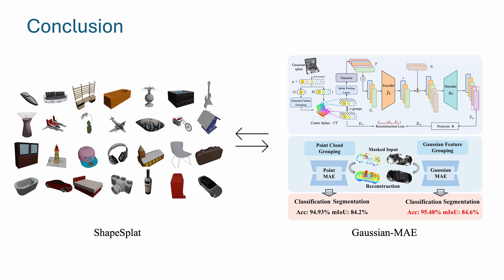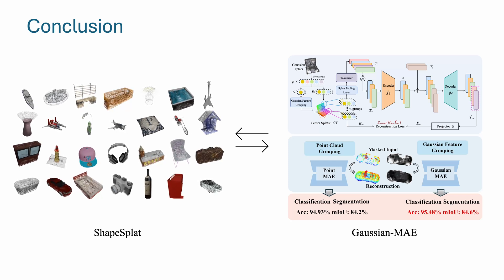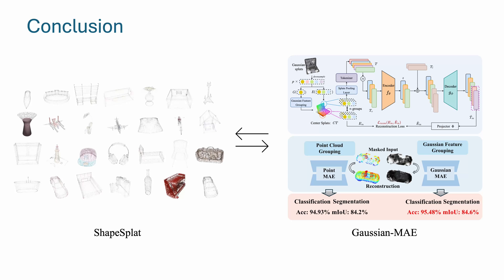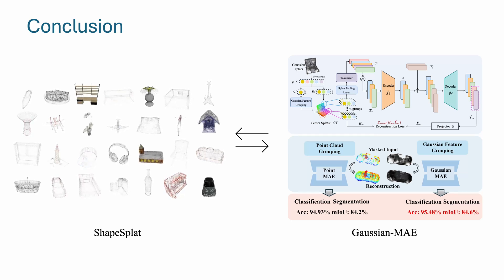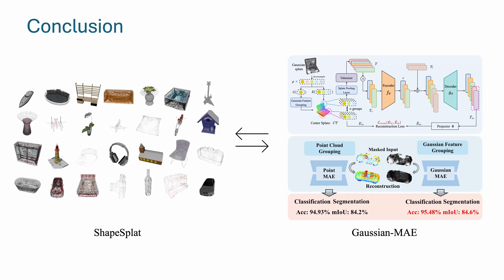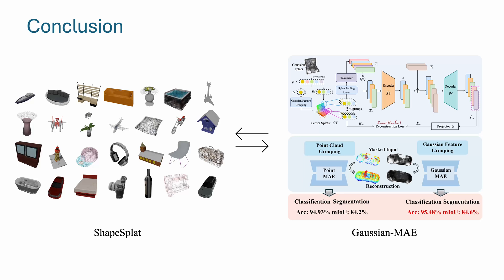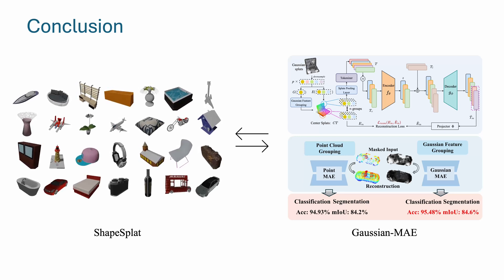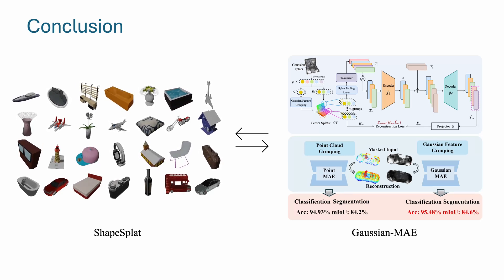In conclusion, we present ShapeSplat dataset, which enables the masked pre-training on 3D GS parameters, together with our Gaussian MAE method, which achieves notable performance increase compared to the point cloud baselines. We hope our work opens a new avenue for self-supervised 3D representation learning. Thanks for your attention.